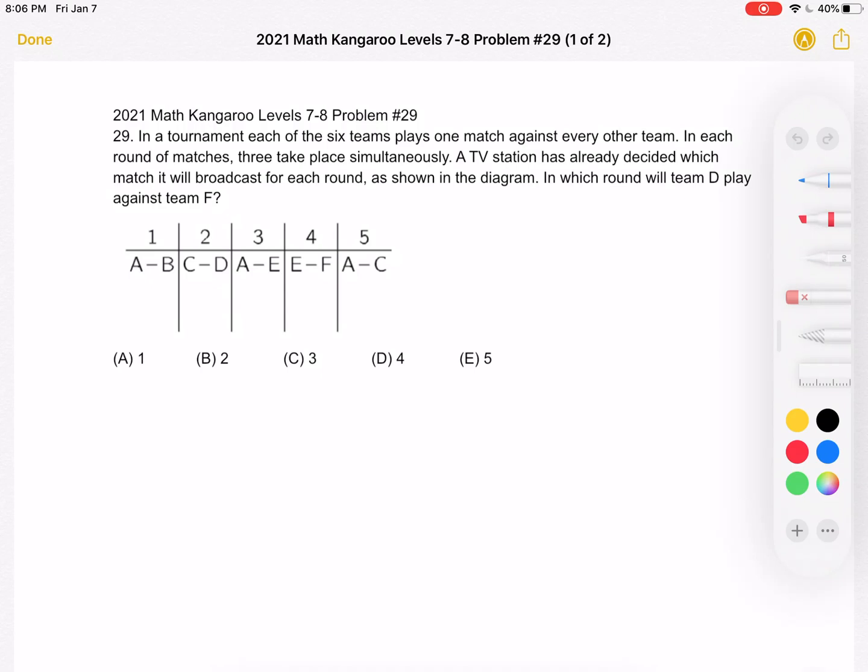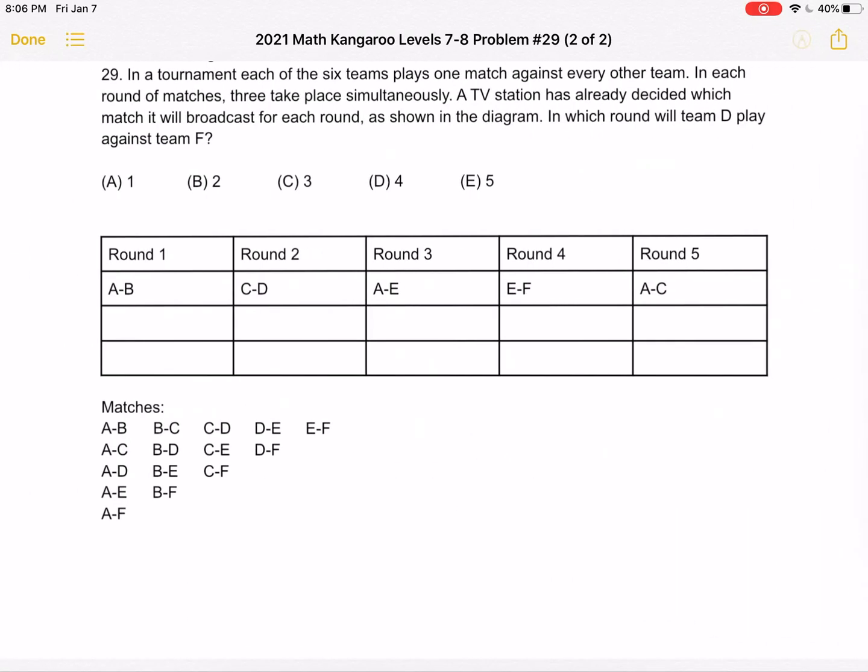In which round will Team D play against Team F? A1, B2, C3, D4, or E5. This is the problem as it originally appeared on the test, and here is where we'll be doing the solution.